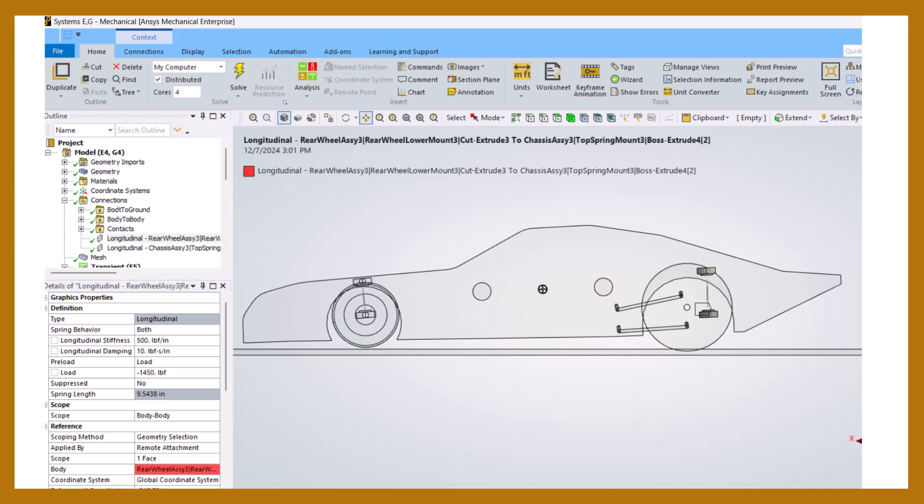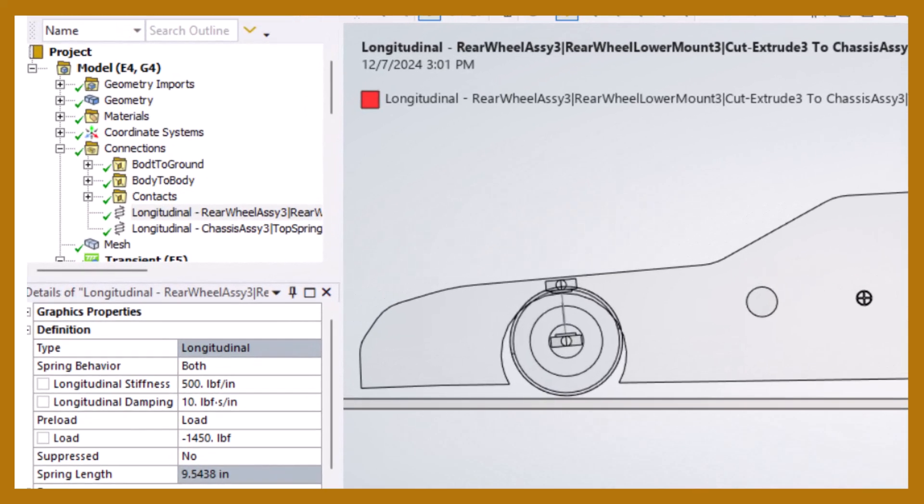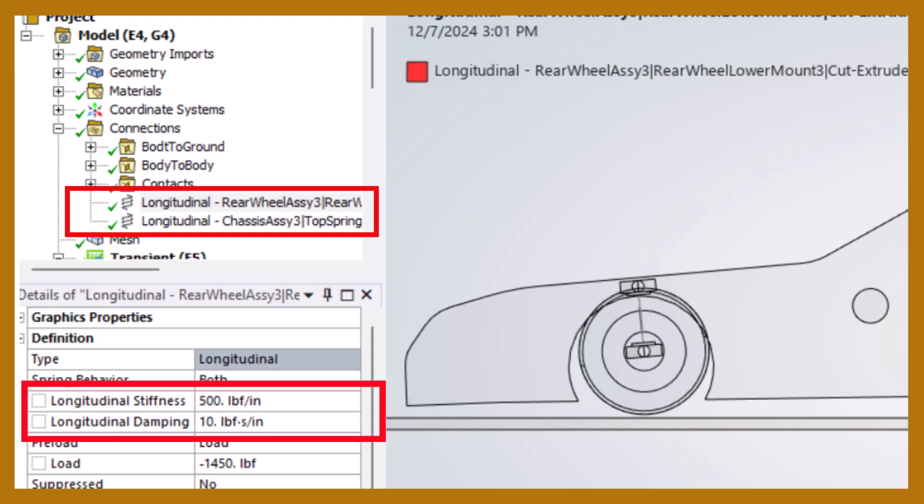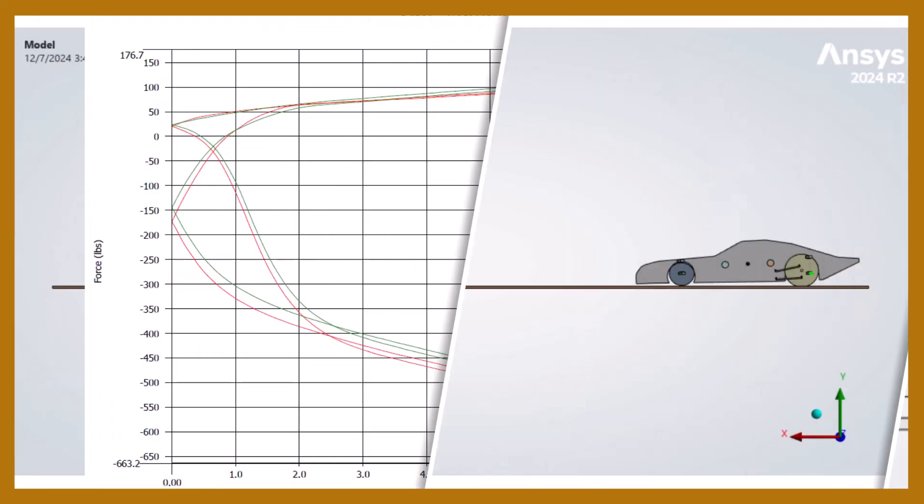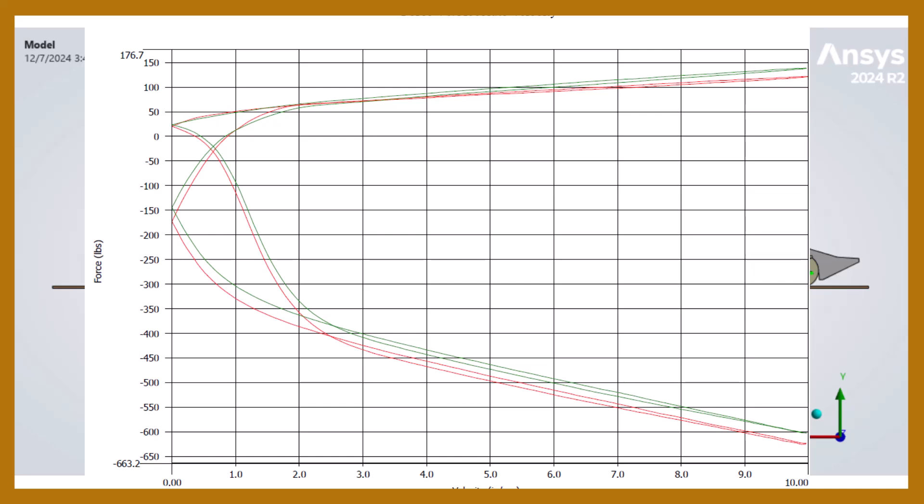The weights and CGs as shown add up to the 2,650-pound car. The spring rates are a linear 500 pounds per inch. Compound rates and non-linear rates can be modeled. The shock rates are a linear 10 pound-second per inch. Any damping configuration can be modeled.